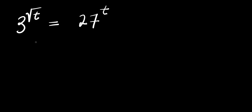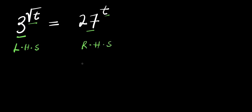Hello, how to solve this exponential radical problem. This is 3 to the power of root t, and this equals 27 to the power of t. We are solving for all values of t that will satisfy this equation — that means values that will make the left hand side of this equation the same as the right hand side. So those are the values that we are looking for.